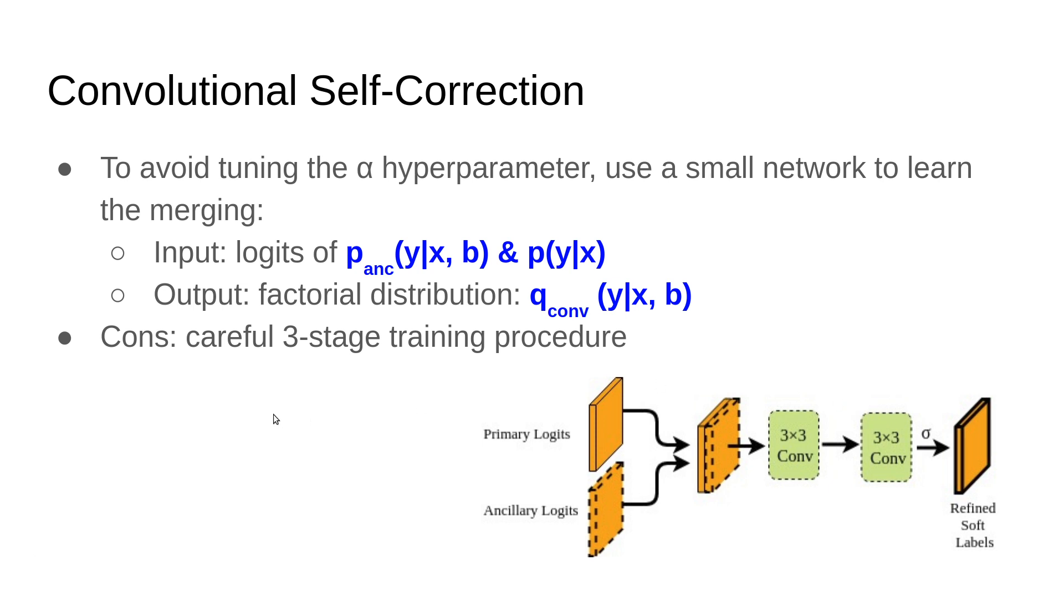What is the problem with that? We found we need a careful three-stage training procedure to make it really correct. The motivation behind this three-stage training is coming from the same reason we needed the alpha term: in early stages of the primary logits, we cannot depend on it as is. So we needed to train in a way that this combining works well.